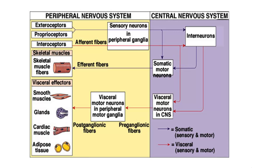An appropriate motor impulse is then stimulated and directed through the somatic motor neurons or the visceral motor neurons in the central nervous system. The motor impulse directed through the somatic motor neurons goes to the efferent fibers innervating the skeletal muscles. The visceral motor neurons transmit the motor impulse into the visceral neurons located in the peripheral motor ganglia through a pre-ganglionic fiber, and from there the motor impulse is directed to the visceral effectors — involving the smooth muscles, glands, cardiac muscles of the heart, and adipose tissue.